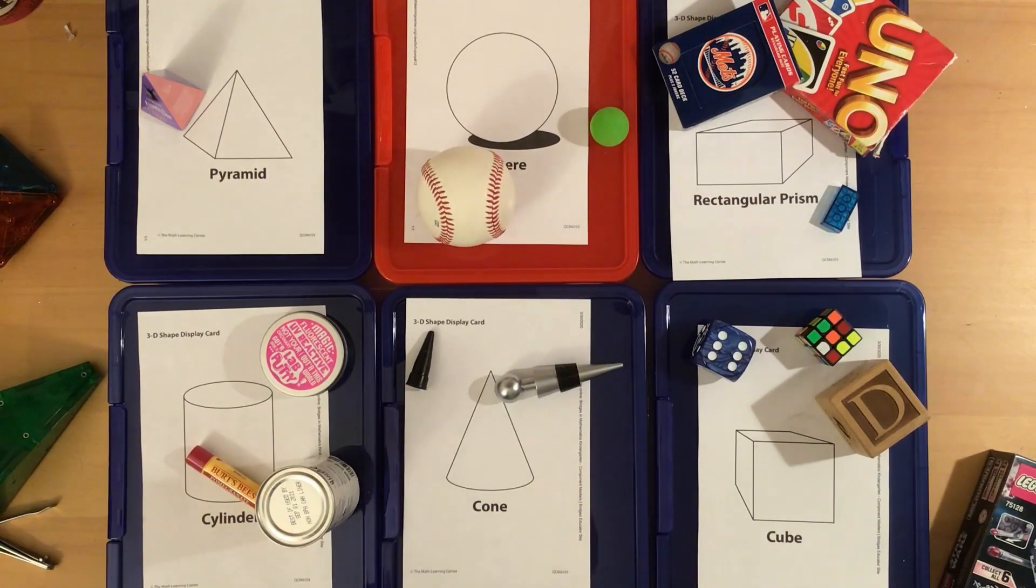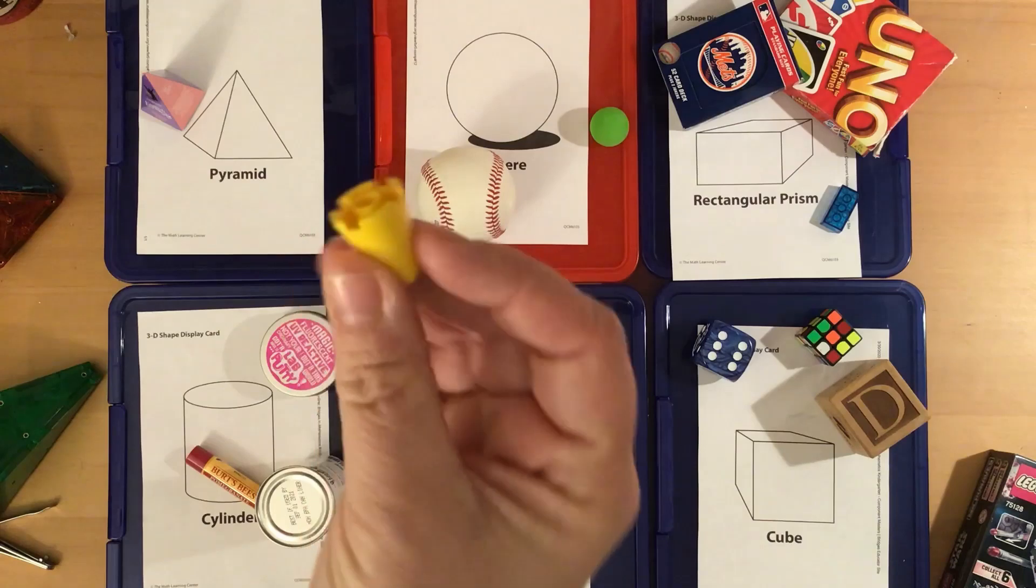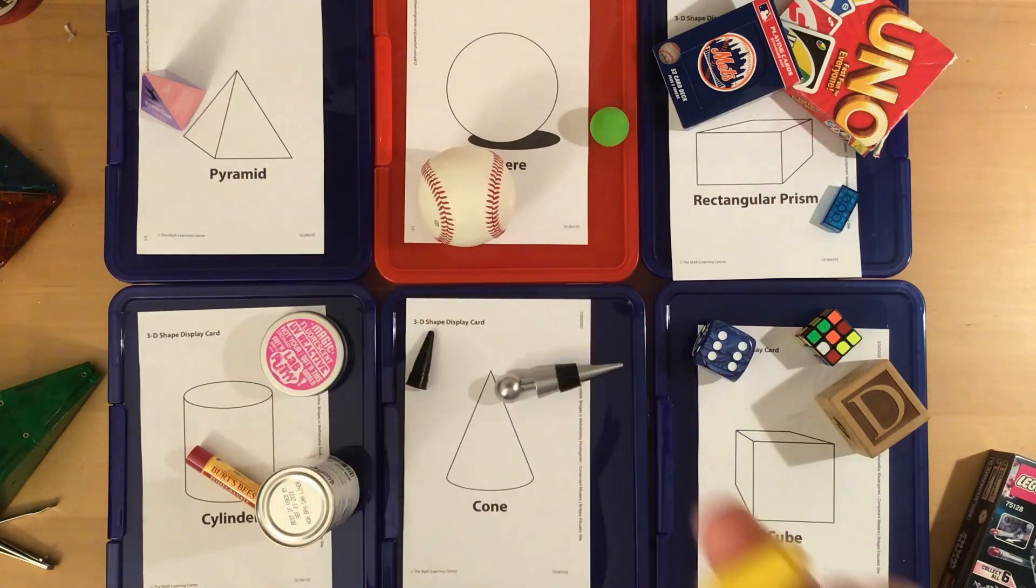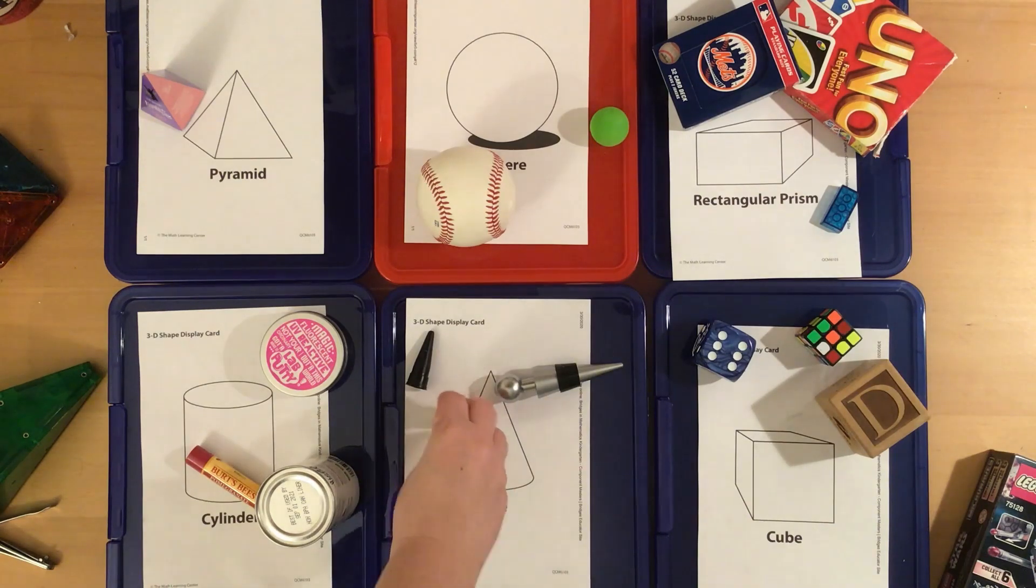Oh, another Lego. This one has a flat circle at the bottom and is curved with a point at the top. Where should that go? Right, right here with the cones.